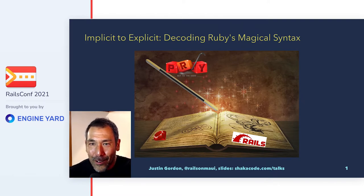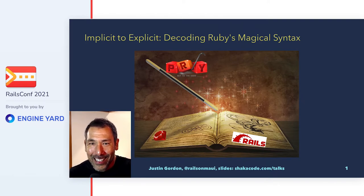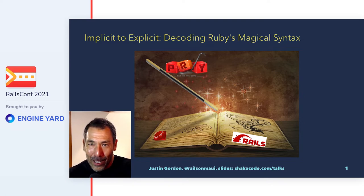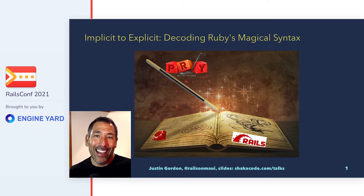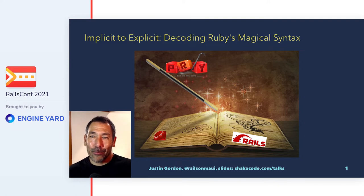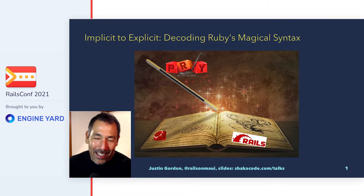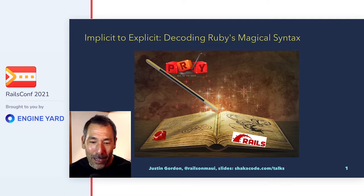Aloha from beautiful Maui. My name is Justin Gordon and I'm here today to give you my talk for Rails Conference 2021: Implicit to Explicit — Decoding Ruby's Magical Syntax. I've wanted to give this talk for a really long time.